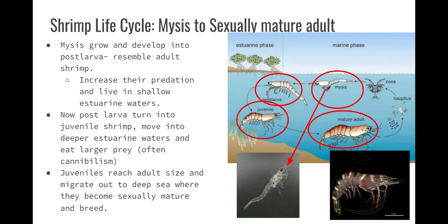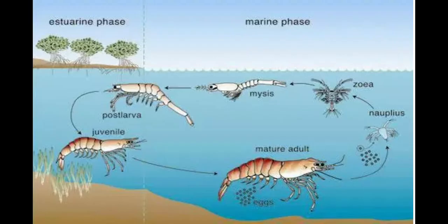Going to a sexually mature adult: they develop into a post-larval phase after three larval phases — nauplius, protozoa, and mysis. Post-larvae resemble adult shrimp, increase their predation, and eat more, living in shallow estuarine waters. The post-larval will turn into juvenile shrimp, moving into deeper estuarine waters where they can eat larger prey, and many times they will cannibalize as well. The juveniles reach adult size and migrate out to the deep sea, where they're sexually mature and breed again.